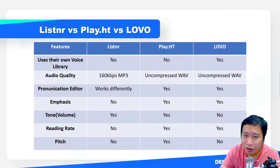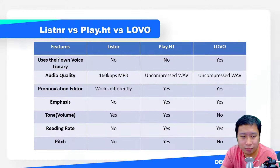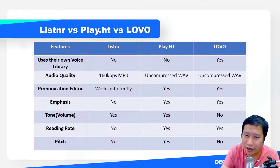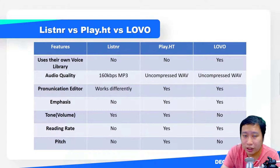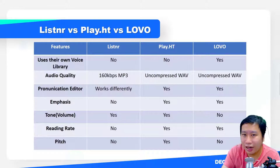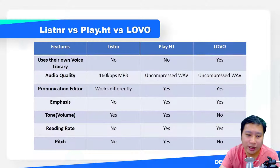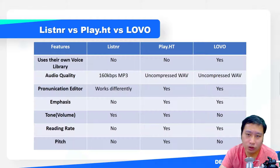Let's dive into the comparison table. With Listner and PlayHT, they don't actually have their own voice library — they get their voices from external sources. PlayHT mostly gets voices from Google and Amazon, same for Listner, though Listner is adding voices from other sources as well. Lovo, on the other hand, creates their own voices, and between the three, if you're looking for a human-like realistic voice, Lovo is a great option.